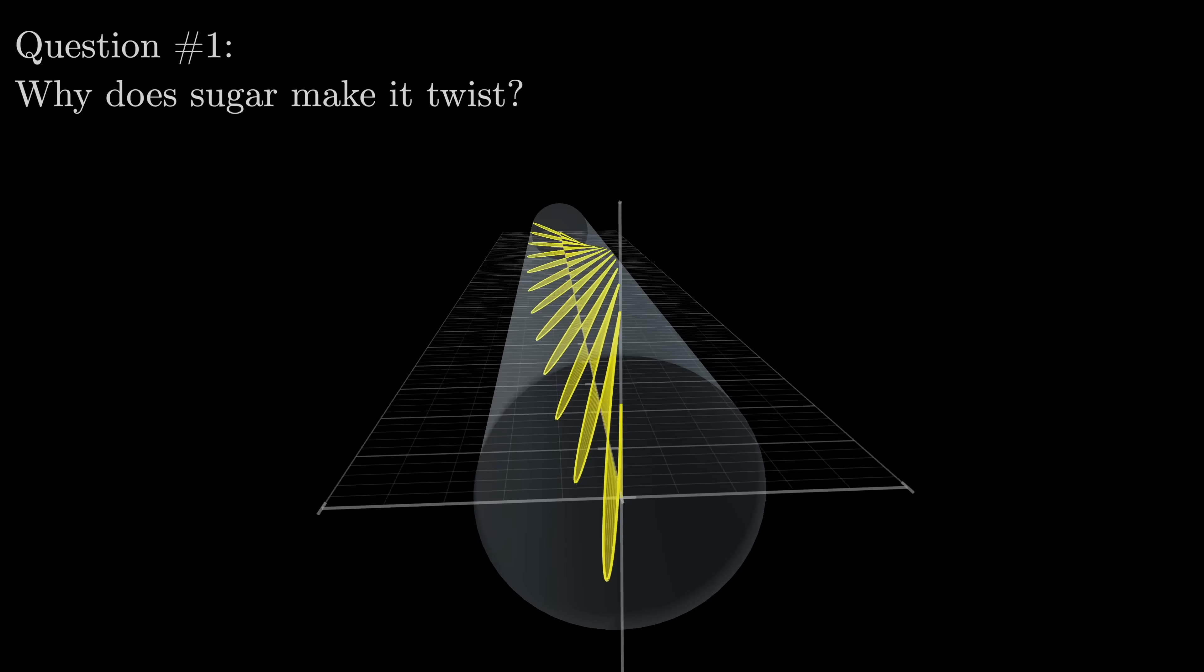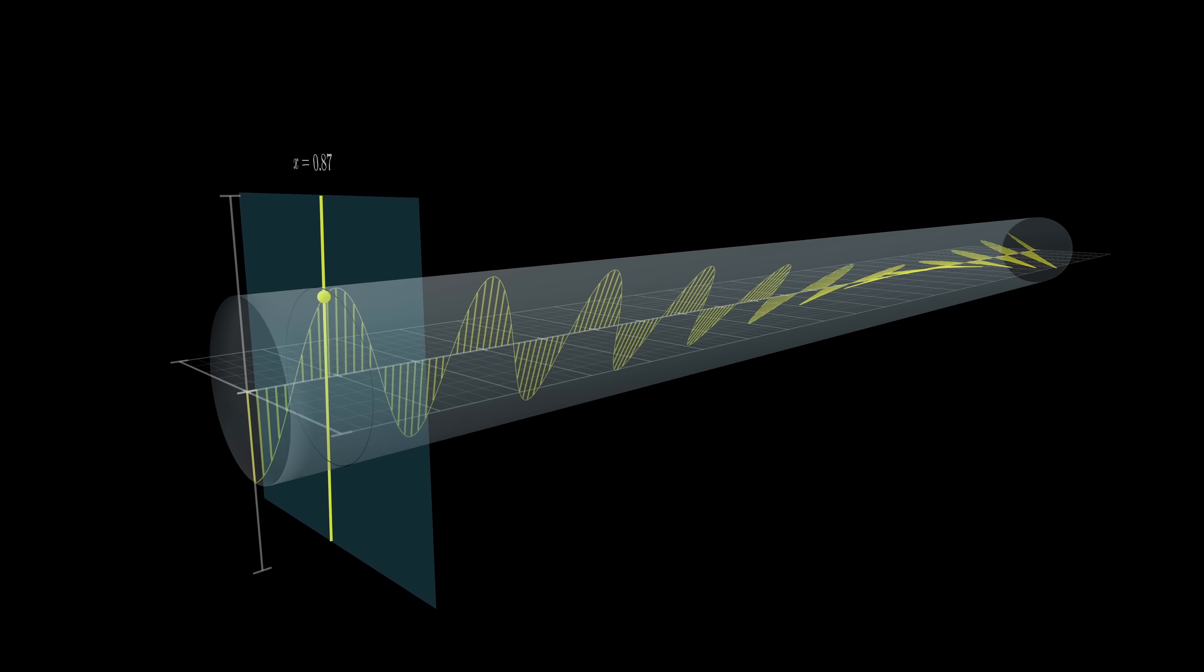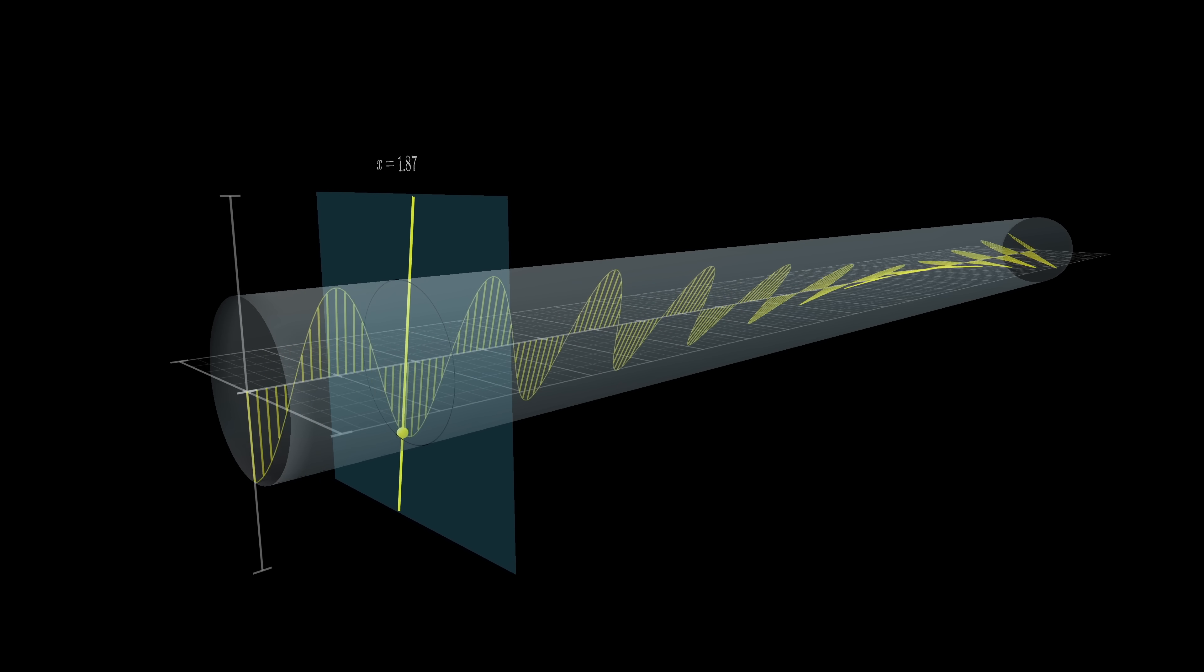And just so that it's crystal clear what I mean by twisting, if you focus your attention on a single slice perpendicular to the axis of the cylinder and draw a line indicating how the light is wiggling on that slice, then if you were to move that slice down the cylinder, the relevant wiggling direction slowly turns about the axis of the cylinder.